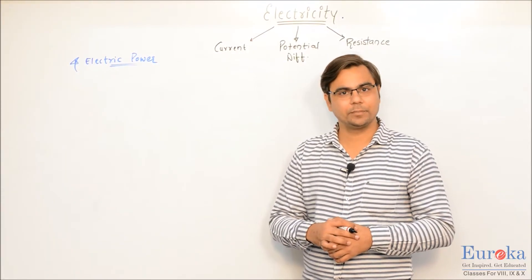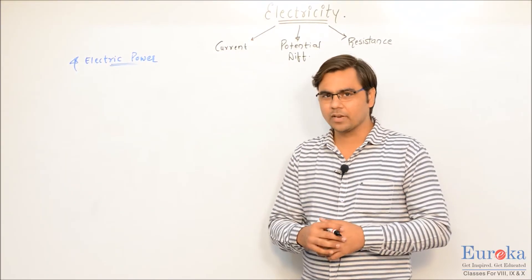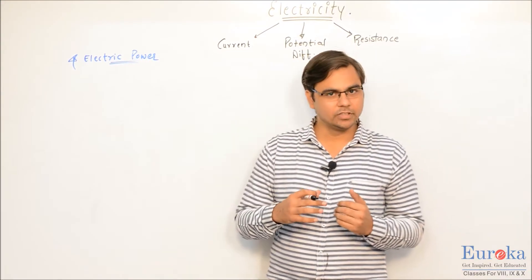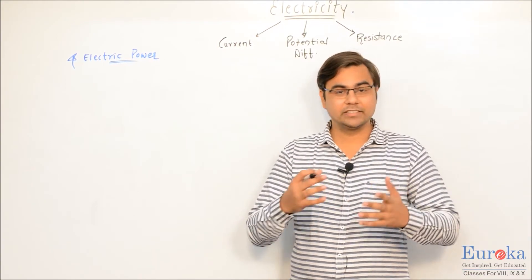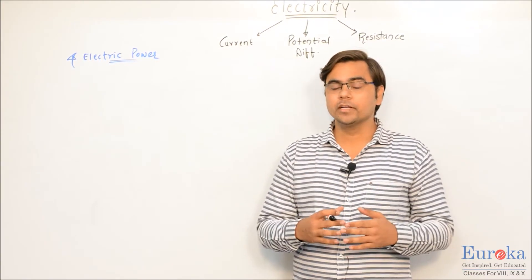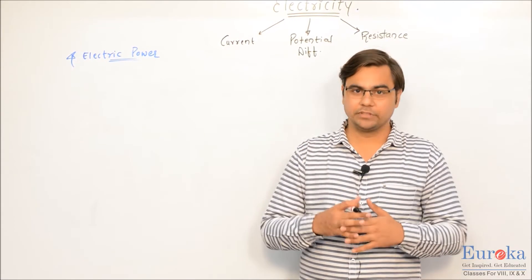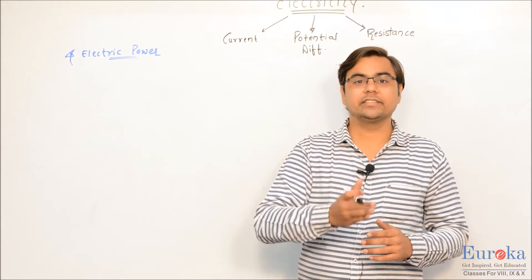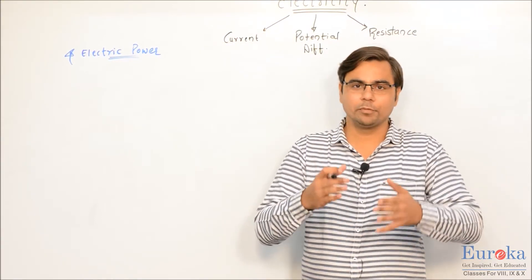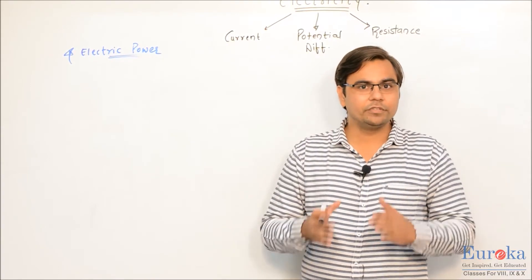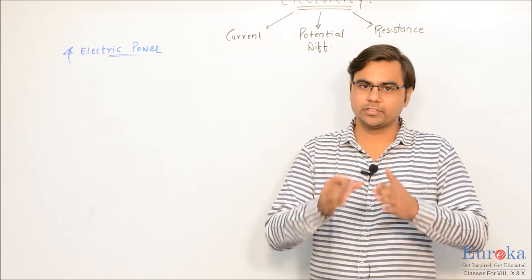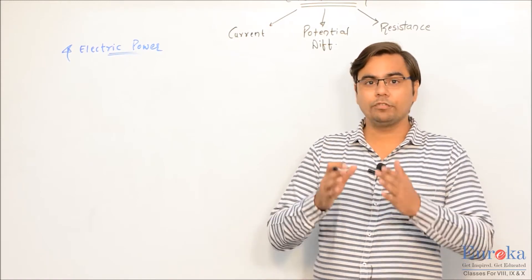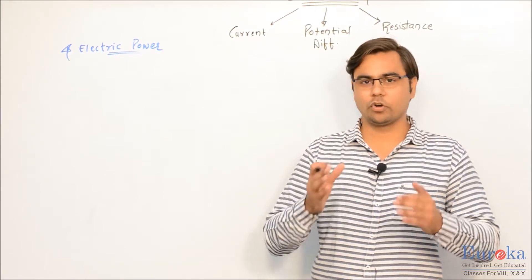Now we talk about another crucial concept of the chapter, but a pretty easy one — that is electric power. To understand electric power, let us recall from earlier standards what we have understood about power, work, as well as energy. Whenever you apply force on any object which causes it to displace, that is what we call work done, and the rate at which this work is done is what we call power. When it comes to electricity, the rate of doing electric work is called electric power.